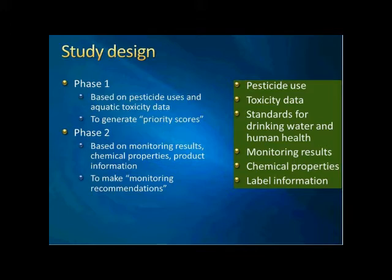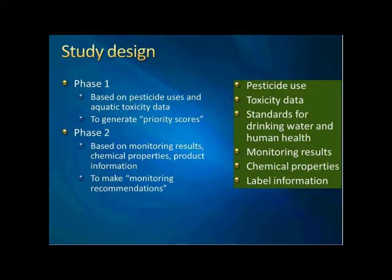The only difference is that registration evaluation is before the pesticide is used in California, while prioritization is for a post-use risk assessment. In the registration evaluation, we mainly use toxicity data and also chemical properties and label information. So we already have everything in the basket. It's time to design the study. We decided to have a two-phase study. Phase one is designed to generate a preliminary priority list — basically a list of pesticides ordered by a parameter called the priority score, which is based on use and toxicity data.